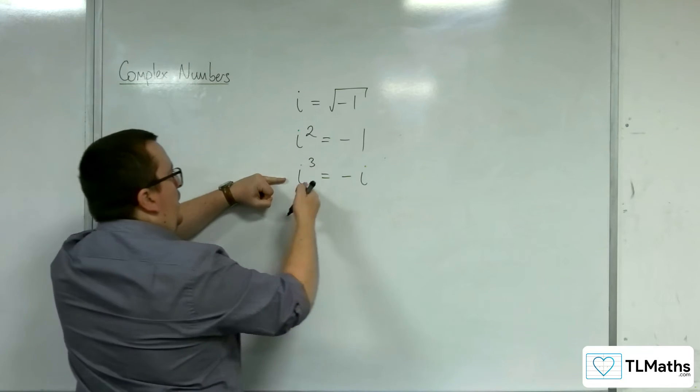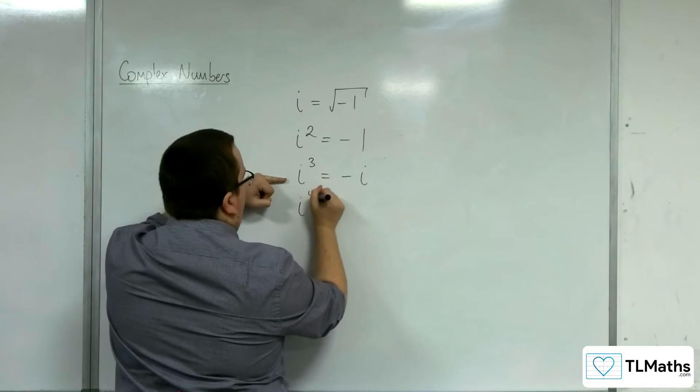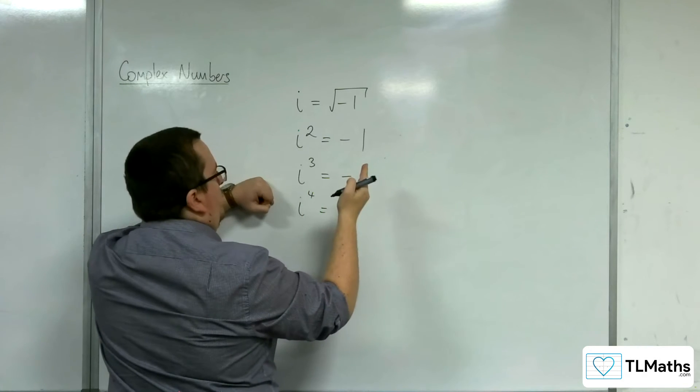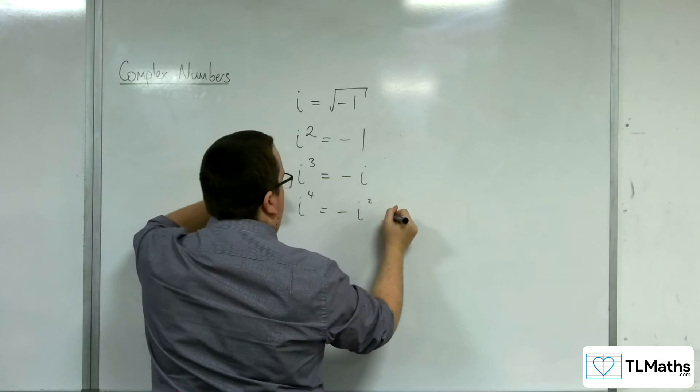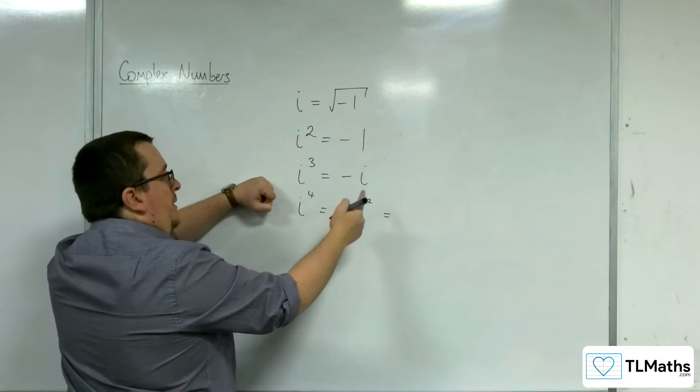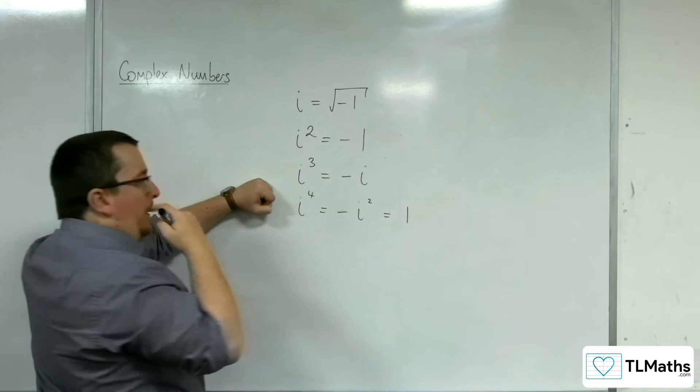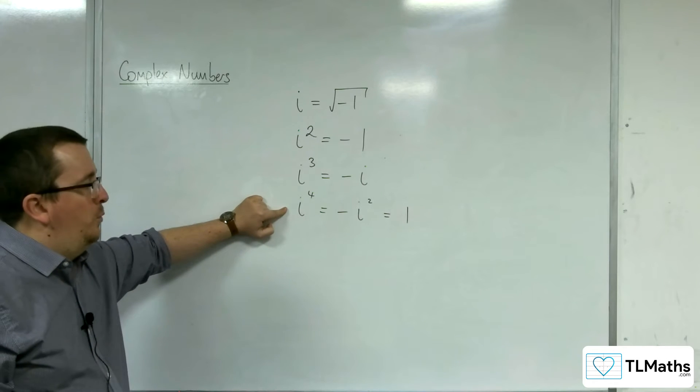If I multiply both sides by i again, I'm going to get i to the 4, and now we've got minus i squared. Now, i squared, remember, is minus 1, so minus times minus 1 is equal to 1. So i to the 4 is actually equal to 1.